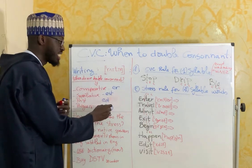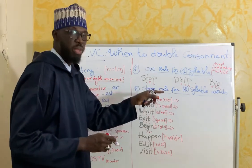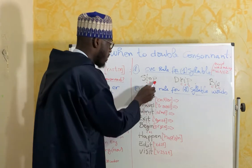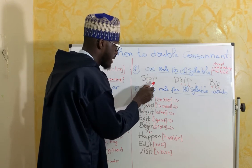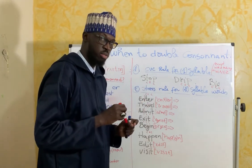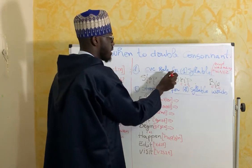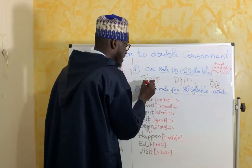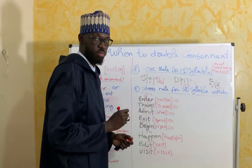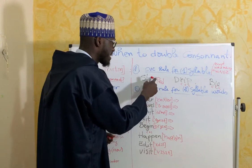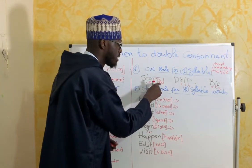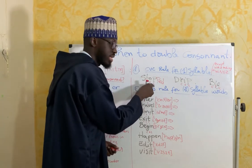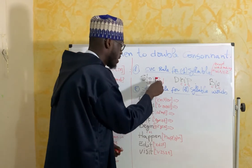For the progressive -ing: 'stopping,' 'dripping.' Do we double the consonant or not? Pay attention. Look at how it is written: C, consonant; V, vowel; P, consonant. When a word has just one syllable and ends in C-V-C, we double the consonant. So we say 'stopped' — to put it in the past, we add -ED, and since it's a one-syllable word ending in C-V-C, we double the consonant. Same for 'stopping.'